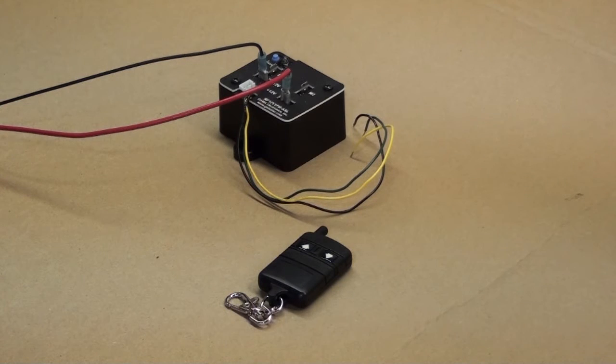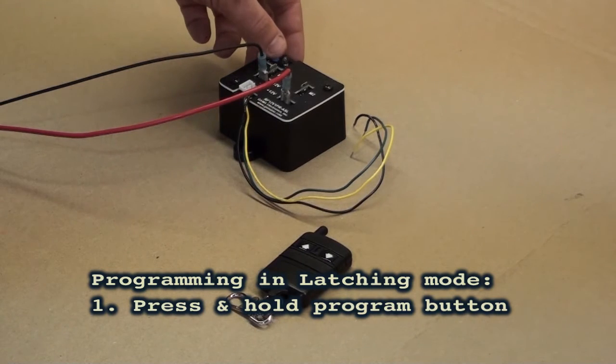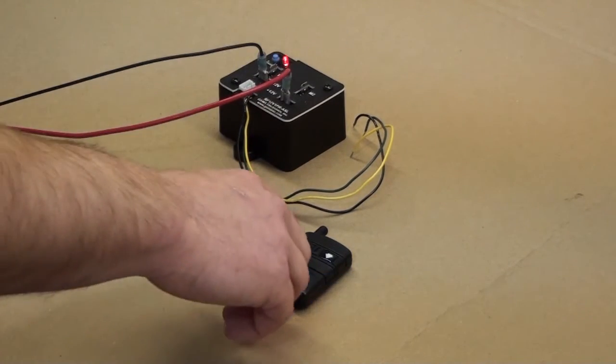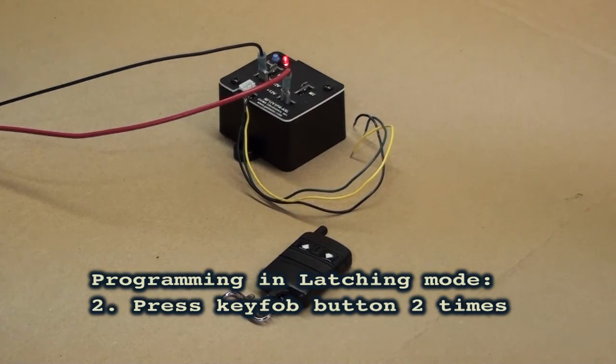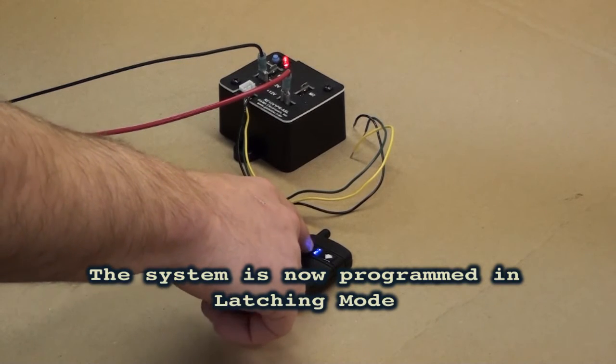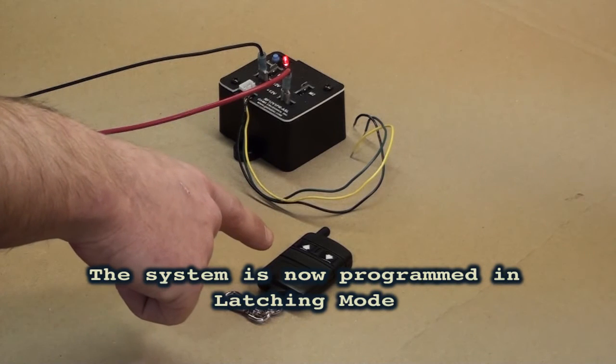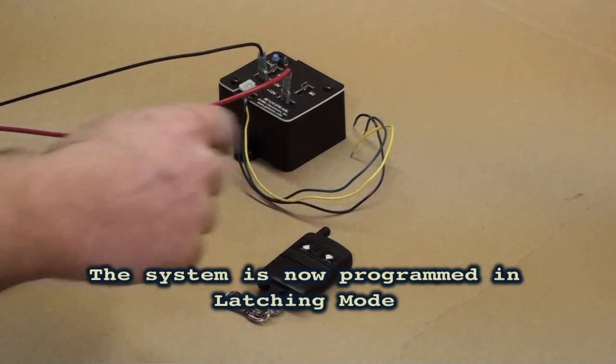This system, like most of ours, can also be set up in latching mode. To do that, press and hold the blue program button. Press one button on the transmitter one time, then a second time. The LED will blink once, then rapidly, and then it will extinguish. The unit is now in latching mode. In latching mode, I press a button one time and the unit goes active. It stays active until I hit the button a second time.